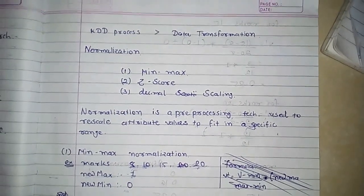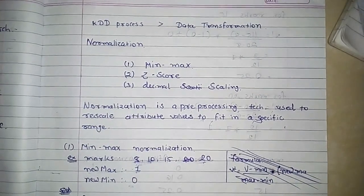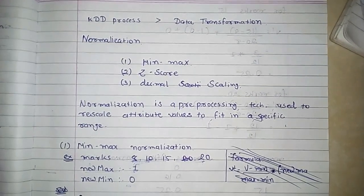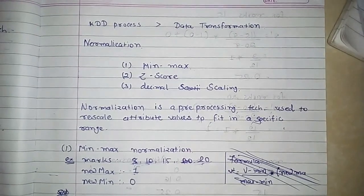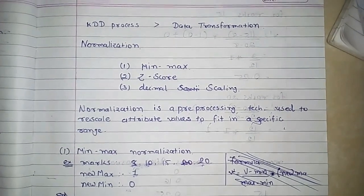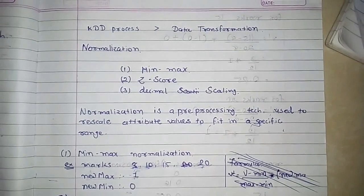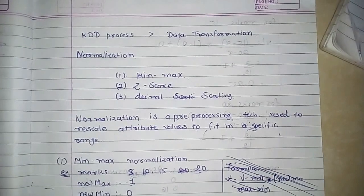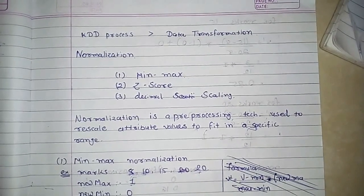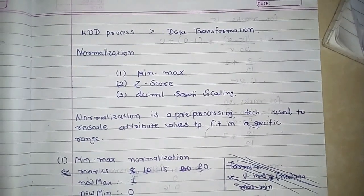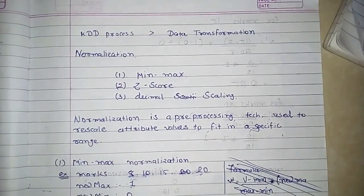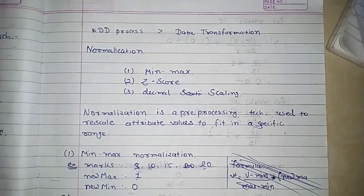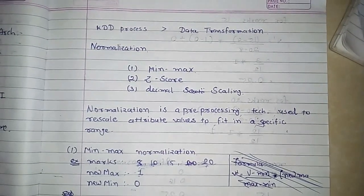Let's discuss normalization techniques. There are three normalization techniques: the first one is min-max normalization, the second one is z-score normalization, and the third one is decimal scaling. Normalization is used in the KDT process, specifically in the data transformation part, which includes data selection, data pre-processing, data transformation, data mining, and evaluation.